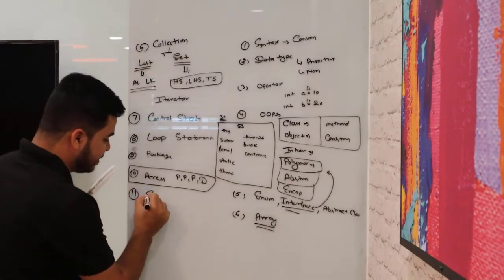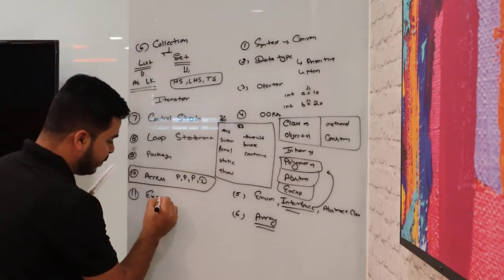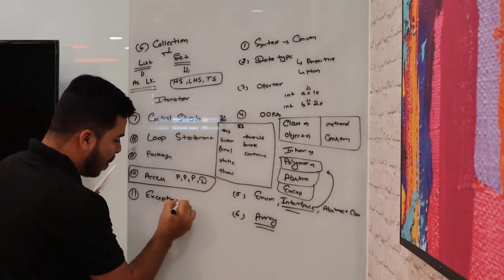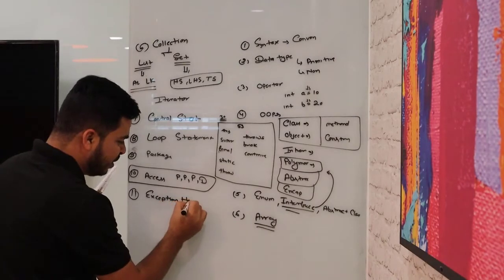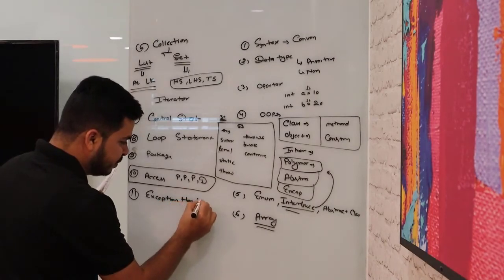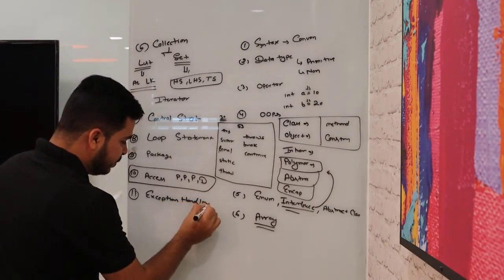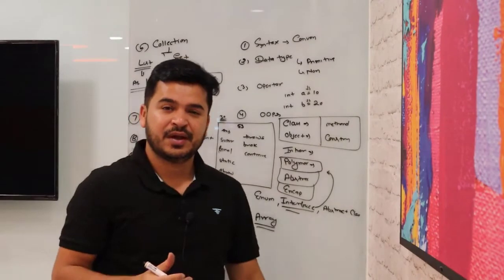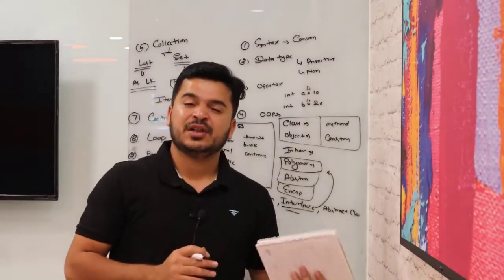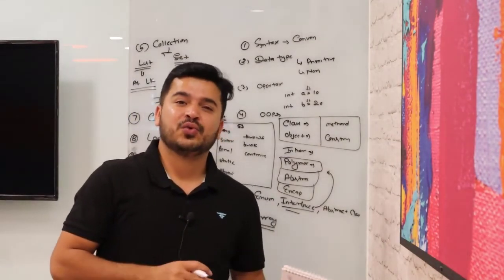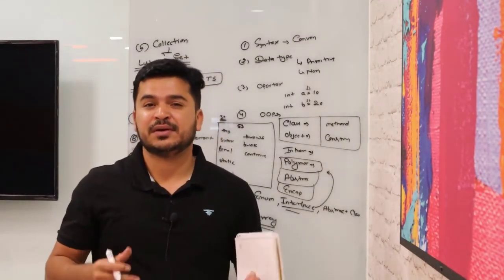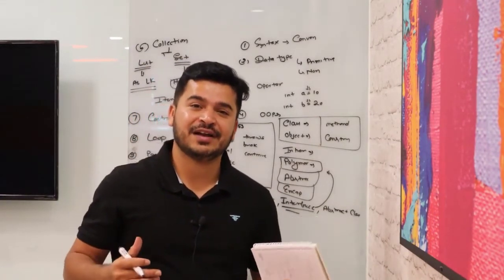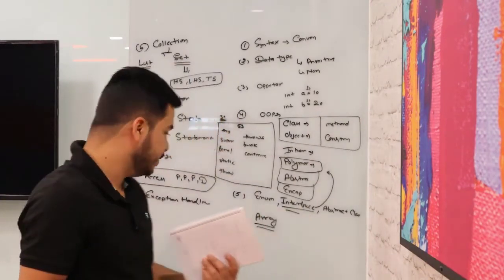Now you can start with exception handling. What is an exception? How do we handle exceptions? What is the difference between an exception and an error? The difference between throw and throws, try-catch, try-catch with finally, and try with multiple catch.